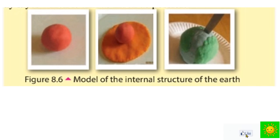Use a sharp knife and cut the clay globe you made into two equal halves. The cross section of the clay globe shows how inner layers are placed.